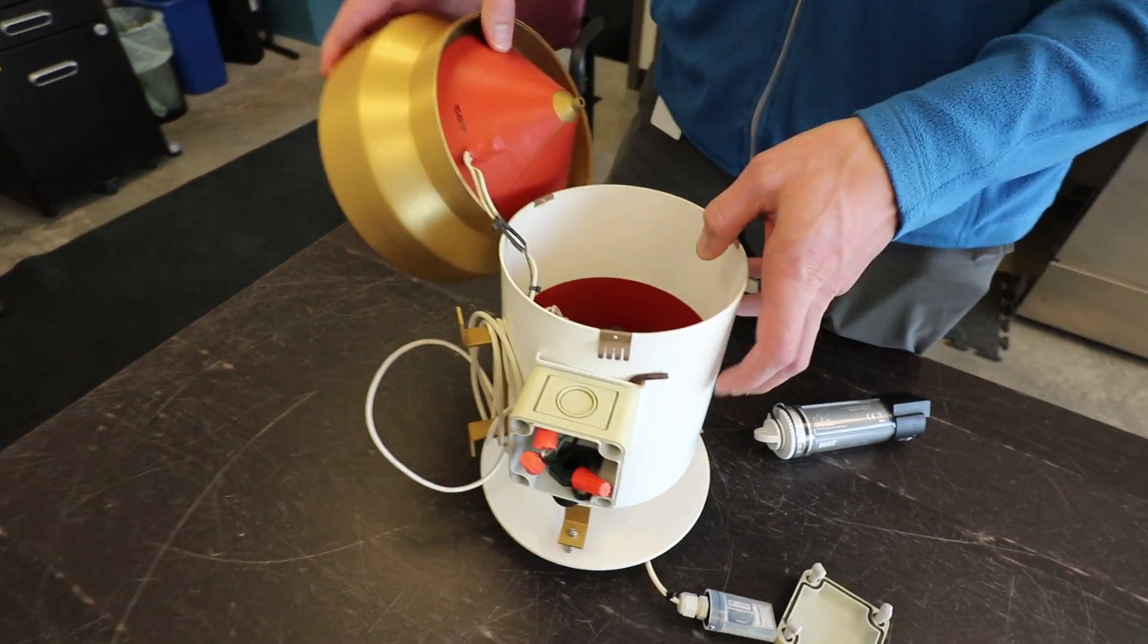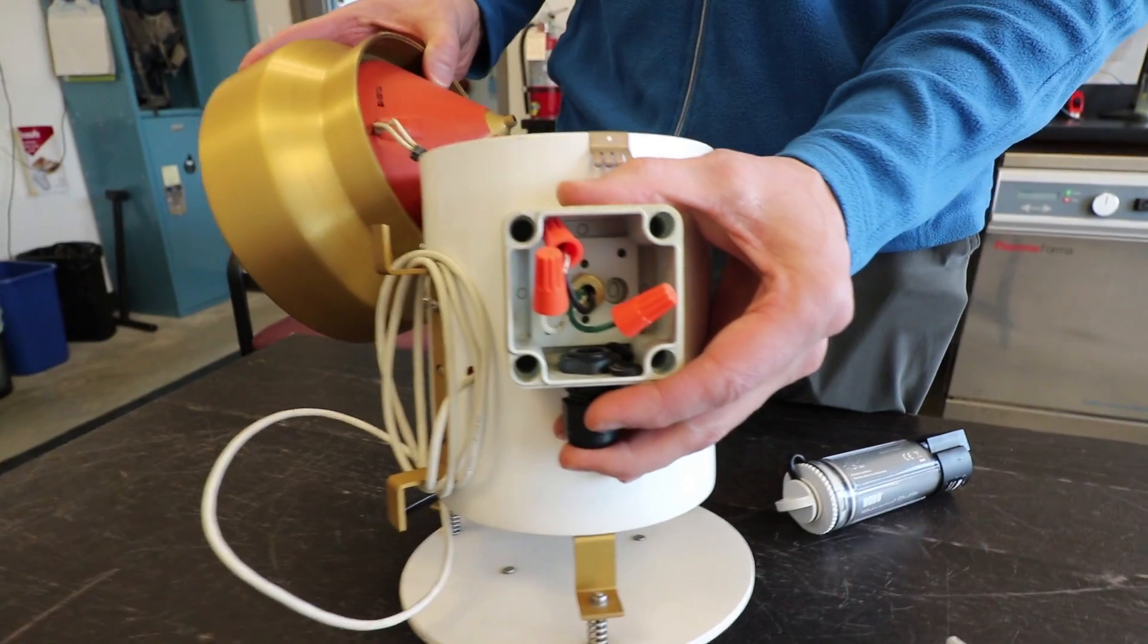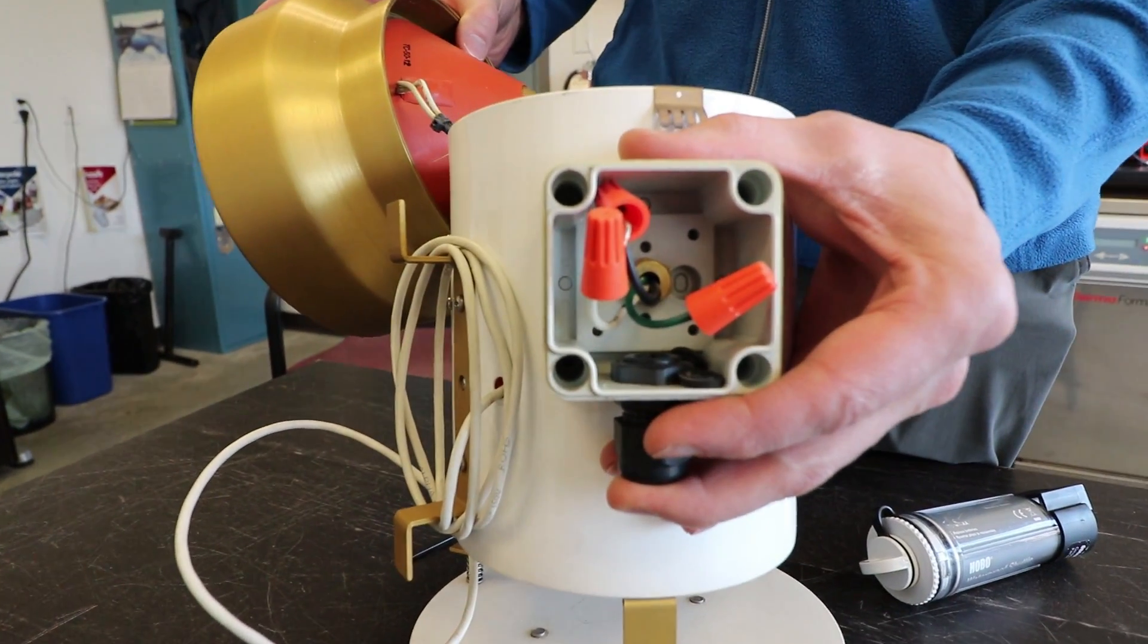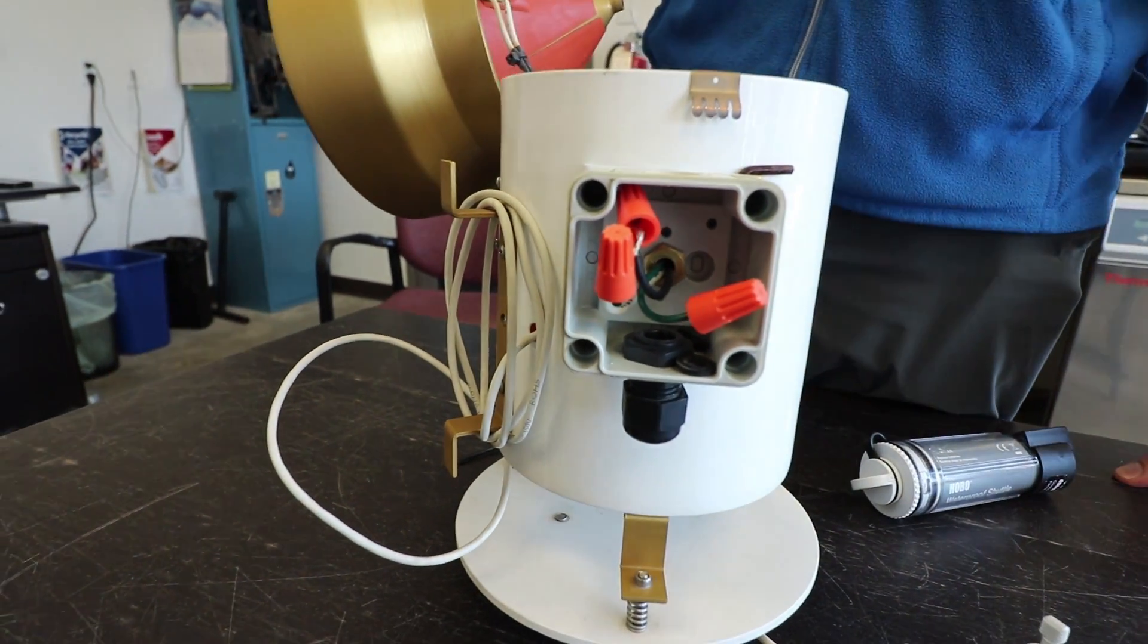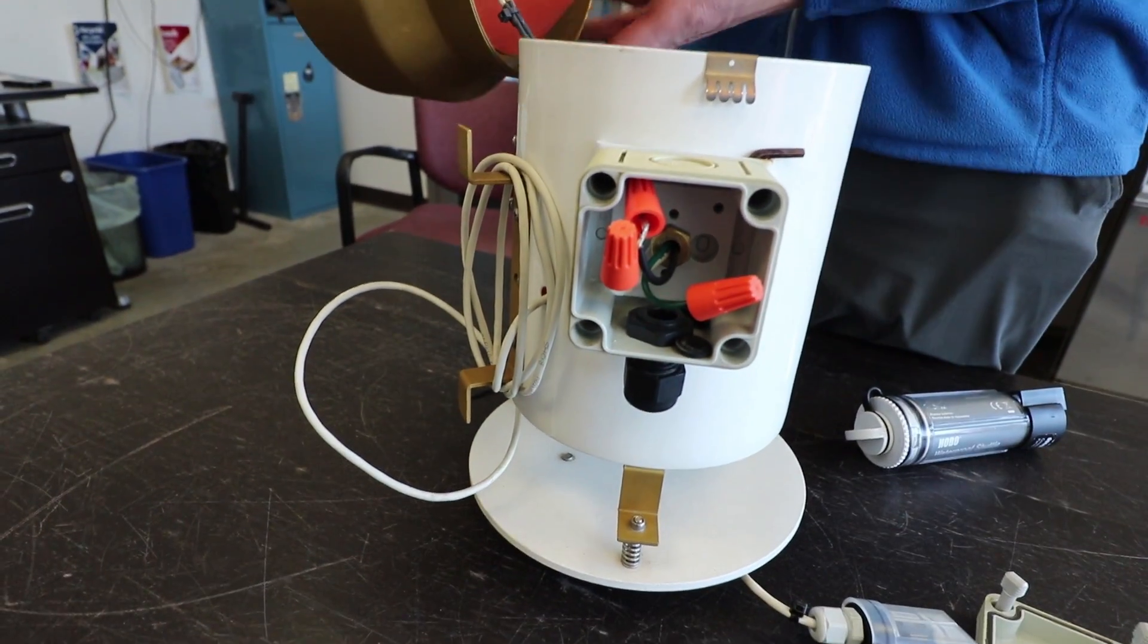You can connect your power source to these wires on the side and there's an internal thermostat that keeps the heated rain gauge at the right temperature to melt snow and ice.